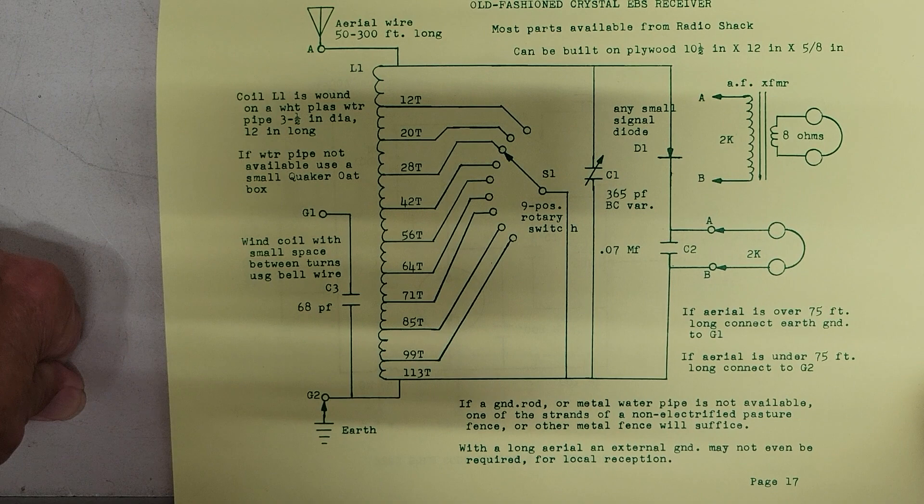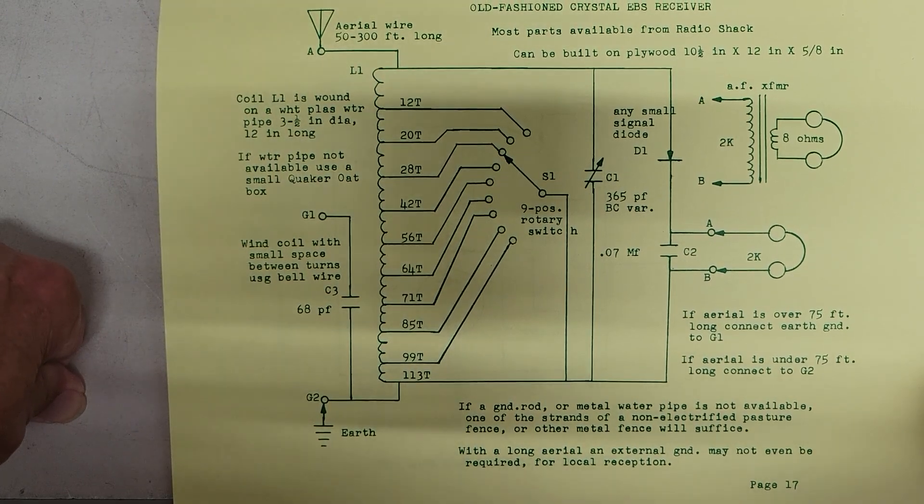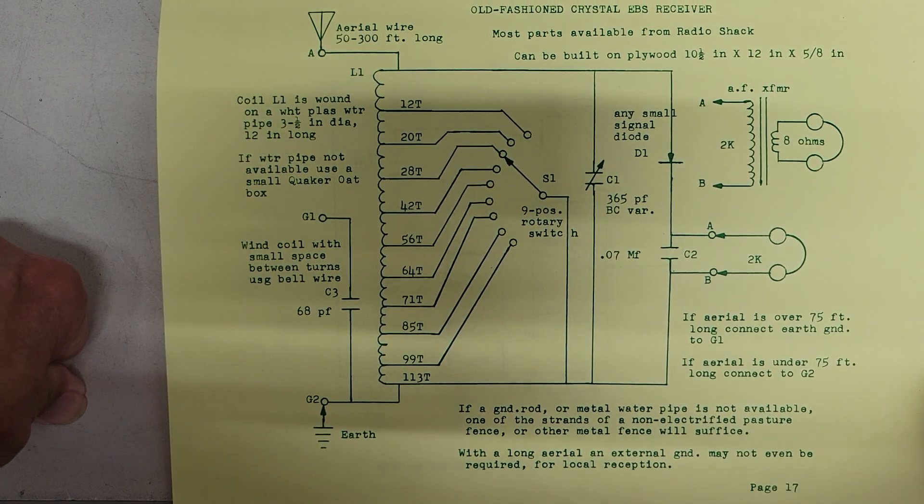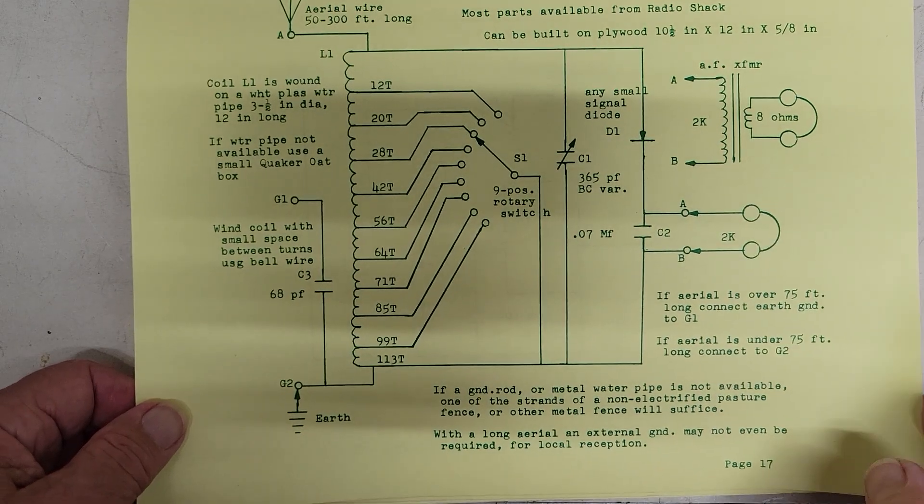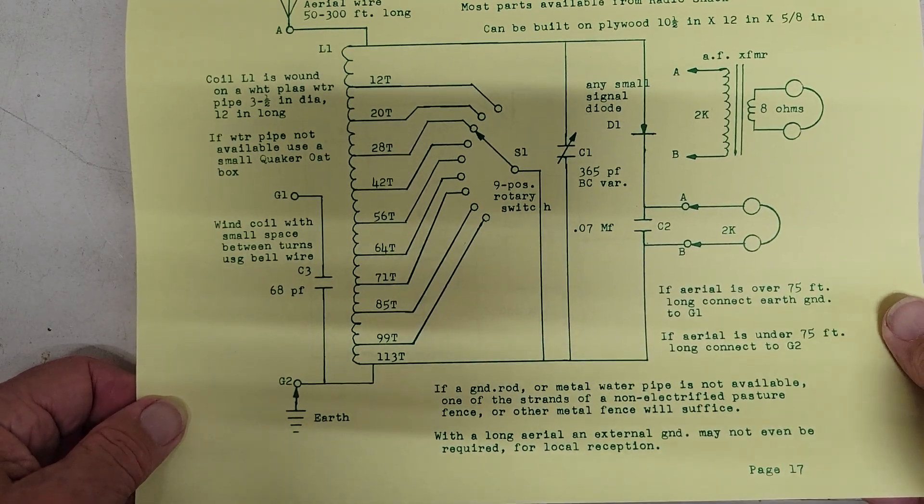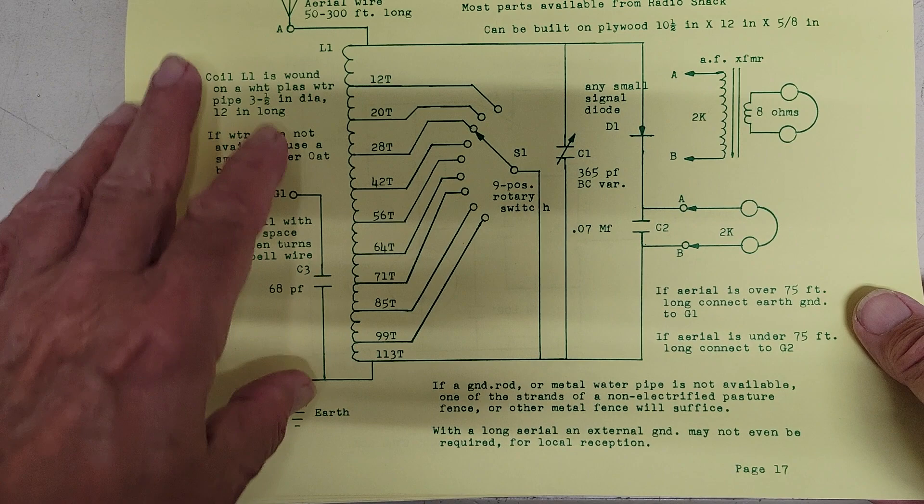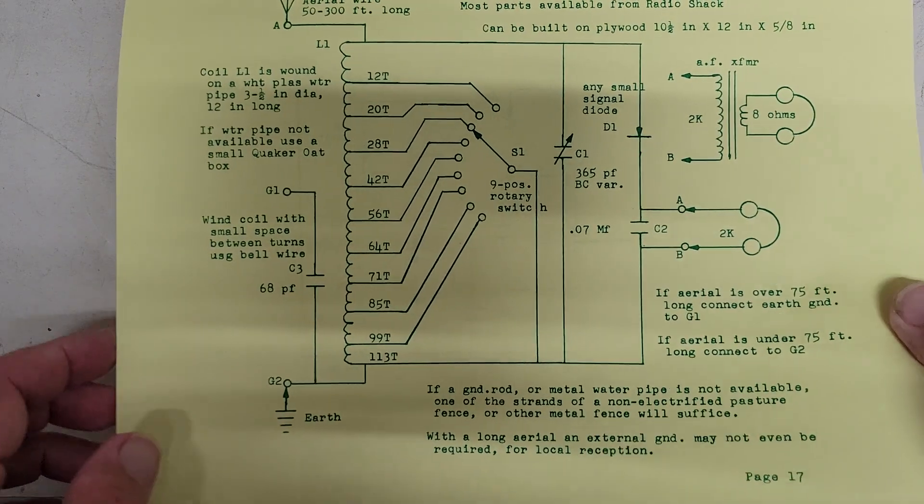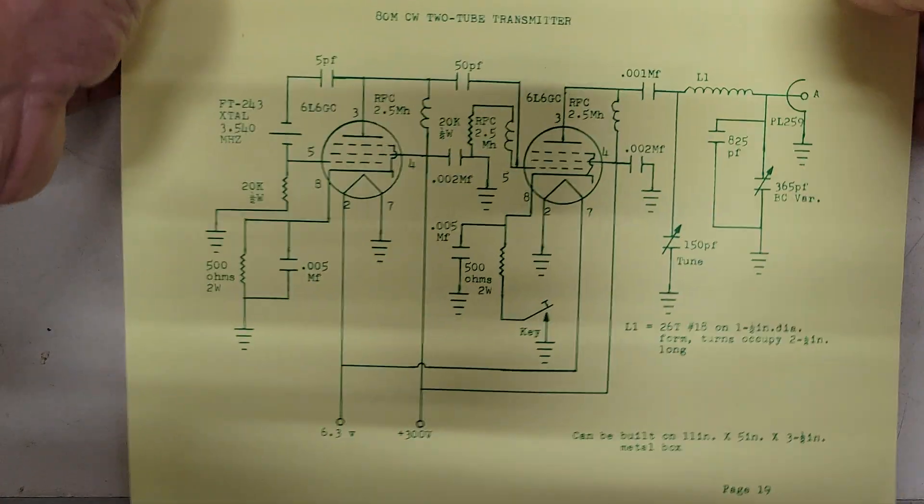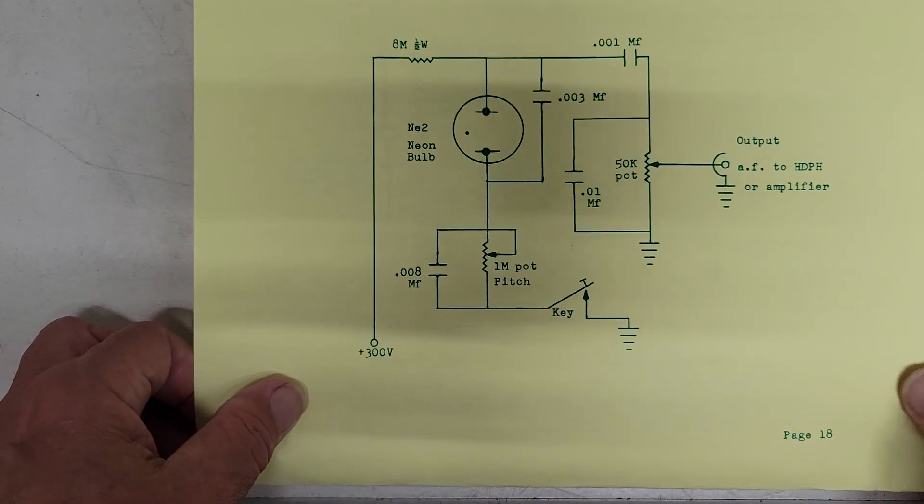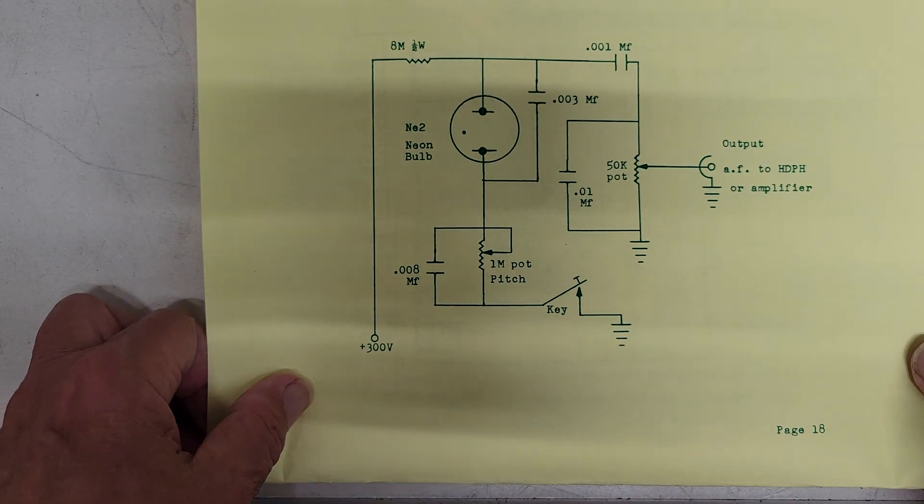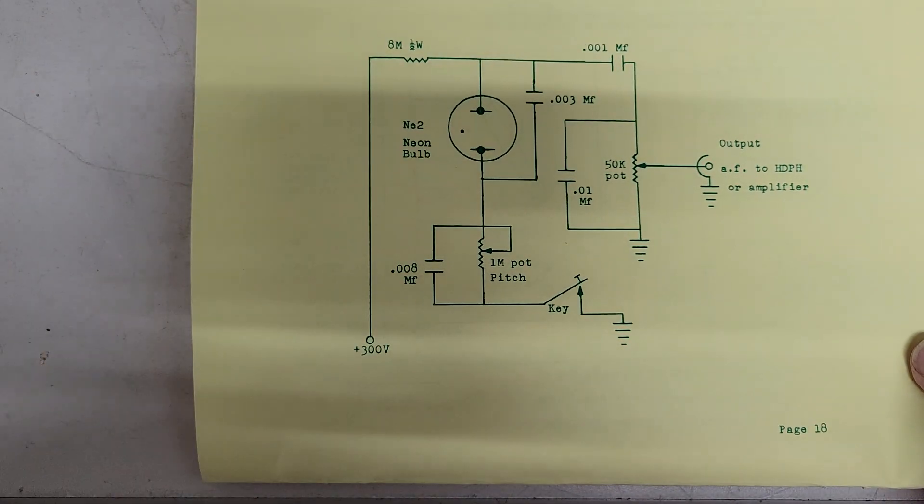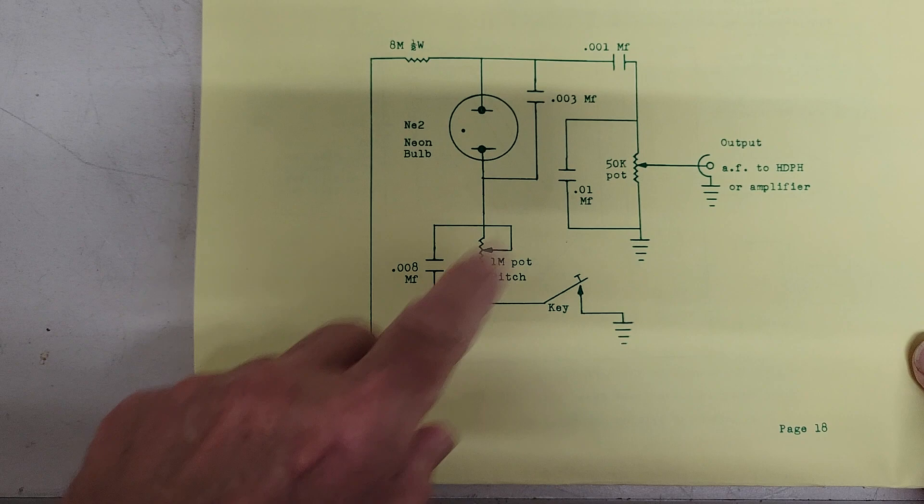And here we have an old fashioned crystal EBS receiver. Emergency broadcast system, I believe, that you could, which no longer is in operation, but you could receive AM radio with it. And he tells you how to wind the coil here and so forth. Now let's see. Here we have a neon bulb code practice oscillator. That's about as simple as it gets. An NE2 bulb and 300 volts on it.